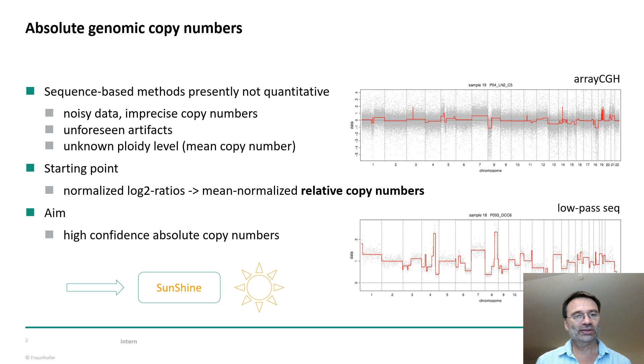So what are absolute genomic copy numbers? Everyone will know, I think, that normal cells have a copy number of two, but in cancers this may be different because parts of the genome may be amplified or the whole genome is amplified or parts are deleted, so that there are a mix of copy numbers in the genome. It may differ even in chromosomes a lot.